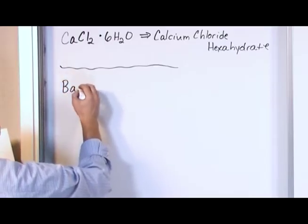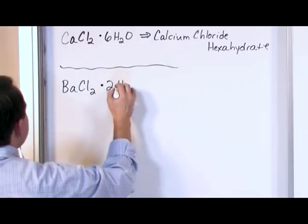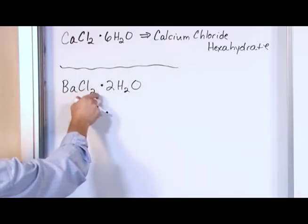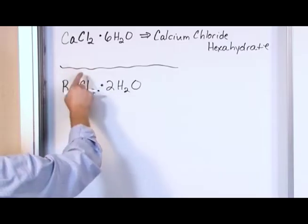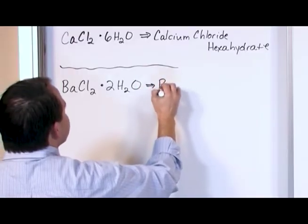What about BaCl2·2H2O? That means I have this barium chloride, but for every one of these formula units I have two water molecules somewhere nearby. So this is barium...